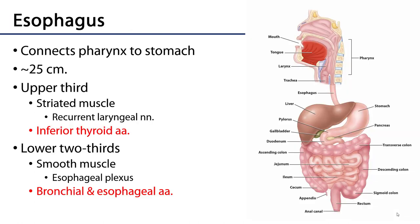The esophagus is a muscular tube that spans the distance between the pharynx and the stomach. It's approximately 25 centimeters long, and if we were to divide it into thirds, the proximal third would be striated muscle which is innervated by the recurrent laryngeal nerves and served by the inferior thyroid arteries.